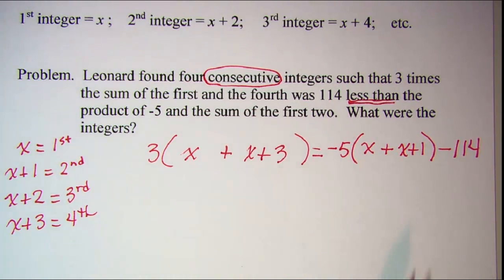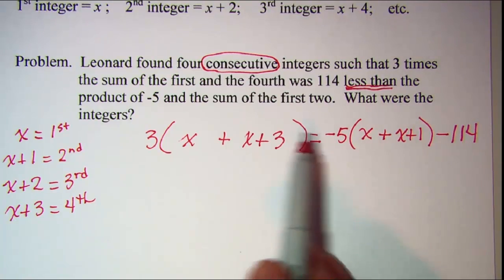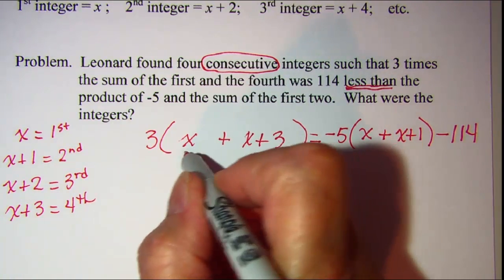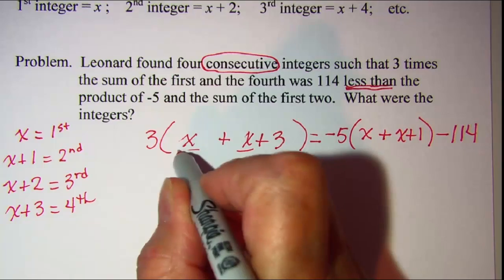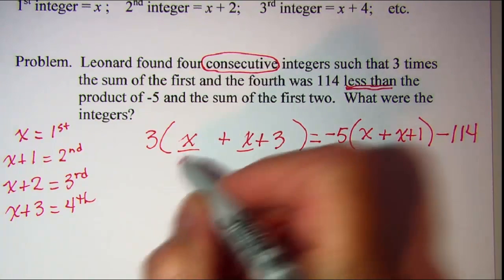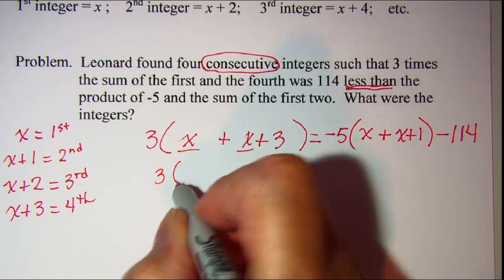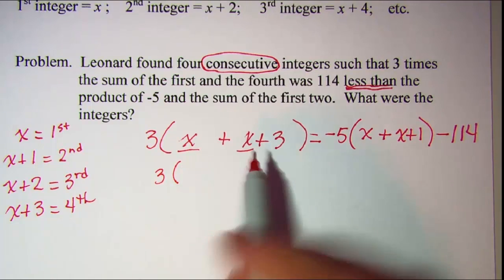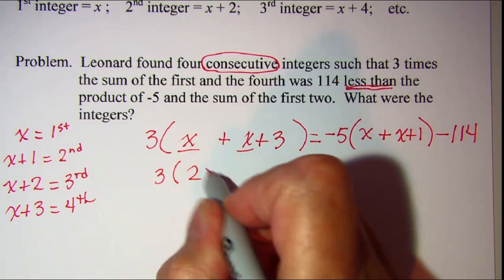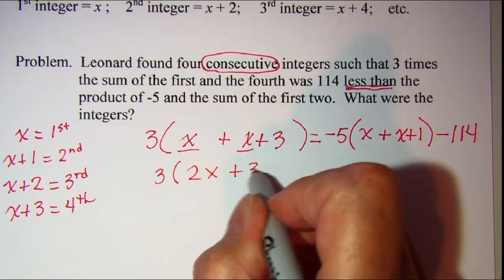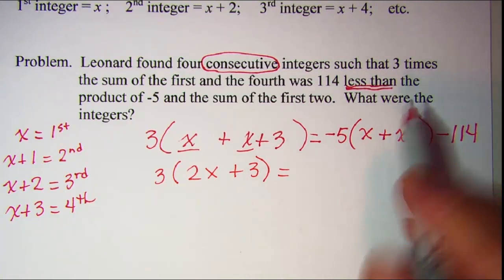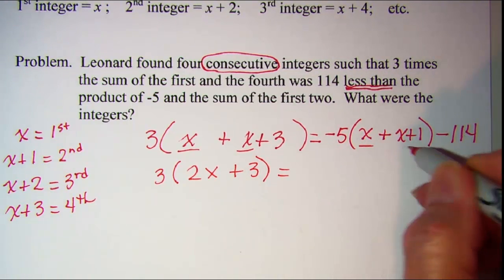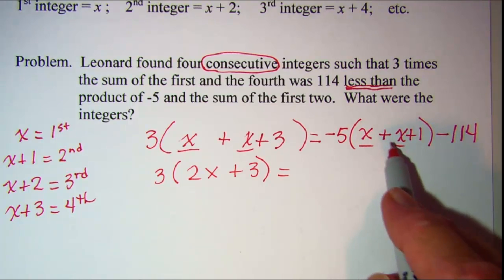So now we're ready to do some math here. Let's combine like terms on the left side. So I have 3 times x plus x is 2x plus 3 and then I can combine like terms inside the parentheses on the right side.